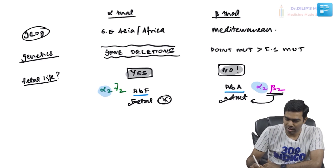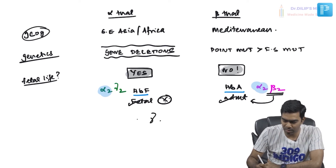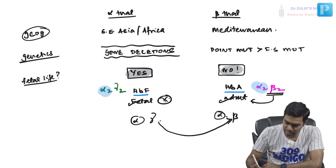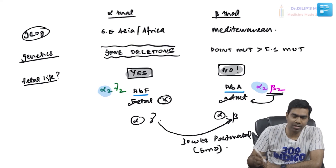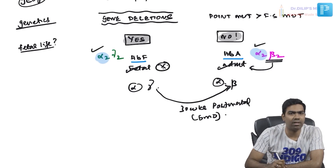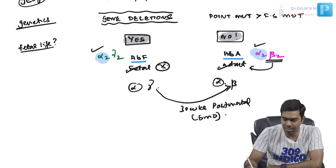Beta chains are formed only in adult life and are not important in fetal life — gamma chains are predominant during fetal life instead. The shift from gamma chains to beta chains is complete by around 30 weeks postnatal, which is approximately 6 months after birth. That is when HBF is completely taken over by HBA. So alpha thalassemias can occur in fetal as well as adult life, but beta thalassemias can only manifest clinically after 6 months of birth.